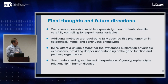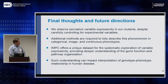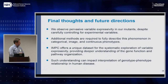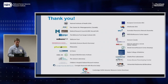In summary, we observe what I would call pervasive variable expressivity in our mutants, despite careful control of experimental variables. This is an interesting and unique opportunity. We need to develop additional methods to fully describe the phenomenon across categorical, image, and continuous phenotypes. The IMPC offers a unique large-scale, systematically generated, highly controlled dataset that can provide deeper insight into gene function, pathway organization, and how genes fit into robust networks. I think this can also impact how we interpret variable expressivity and incomplete penetrance in human disease datasets. Thank you to everybody in the IMPC overall and to the people I credited along the way.